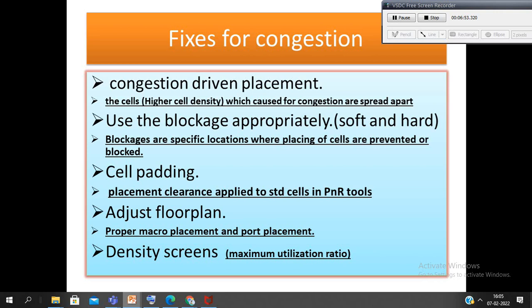Third one is cell padding. Cell padding refers to placement clearance applied to standard cells in the P&R tool. This is typically done to ease the placement congestion or reserve some space for future use down the flow. For example, typically people apply cell padding to the buffers or inverters used to build the clock tree, so that space is reserved to insert decap cells near them after the CTS.